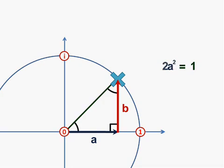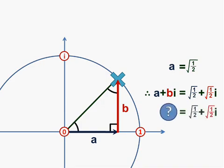This gives us the equation that 2a squared equals 1, so a squared is a half, and a is the root of a half. b is of course also root of a half, and so the number that we need to multiply by to rotate 45 degrees is root a half plus root a half i.